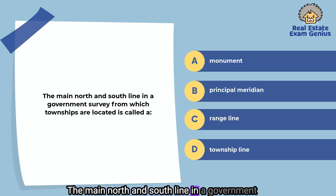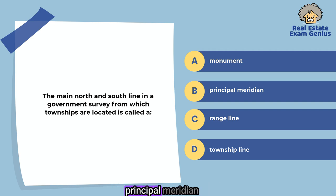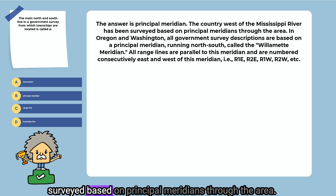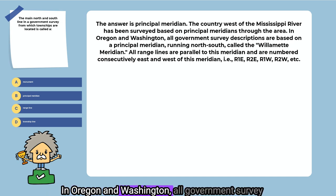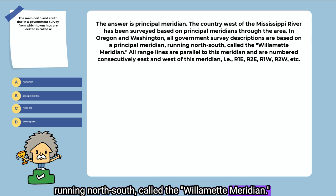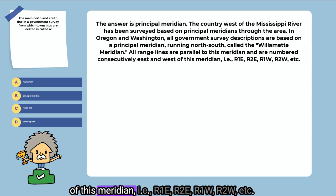The main north and south line in a government survey from which townships are located is called a: monument, principal meridian, range line, or township line. The answer is principal meridian. The country west of the Mississippi River has been surveyed based on principal meridians. In Oregon and Washington, all government survey descriptions are based on a principal meridian running north-south called the Willamette Meridian. All range lines are parallel to this meridian and are numbered consecutively east and west — R1E, R2E, R1W, R2W, etc.